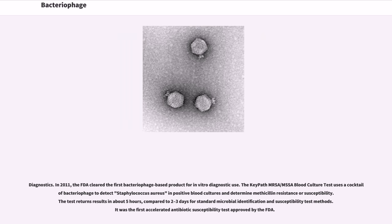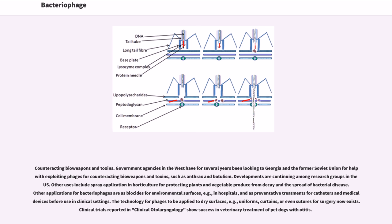Government agencies in the West have for several years been looking to Georgia and the former Soviet Union for help with exploiting phages for counteracting bioweapons and toxins, such as anthrax and botulism. Developments are continuing among research groups in this area.